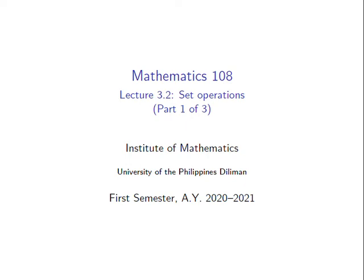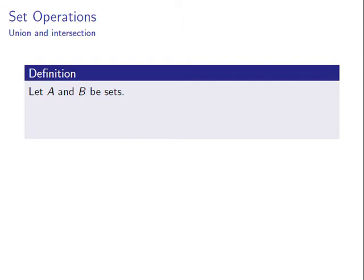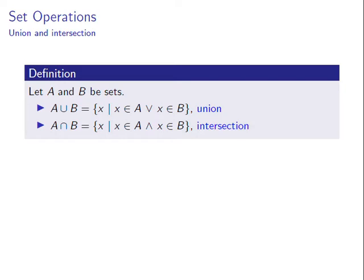This is Part 1 of Lecture 3.2: Set Operations. In this video we will introduce the operations of set union and set intersection and give examples of proofs of statements involving these. Let A and B be sets. The union of A and B is the set consisting of all objects x such that x is an element of either A or B. The intersection of A and B is the set consisting of all objects x such that x is an element of both A and B.